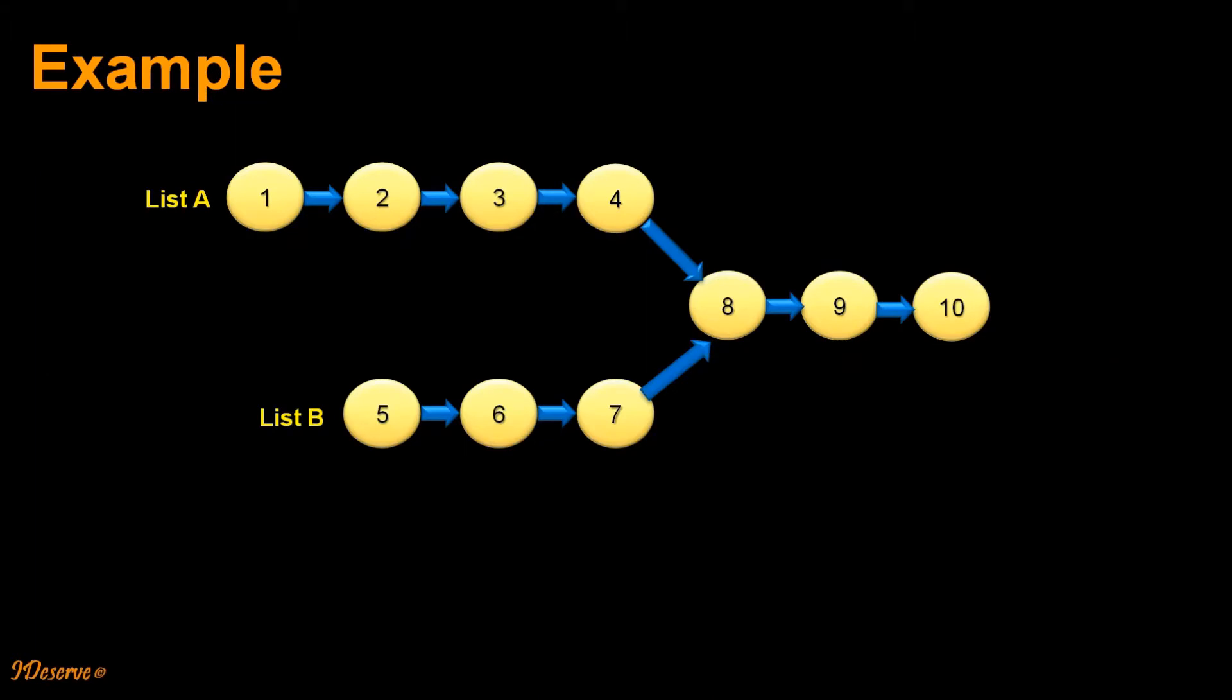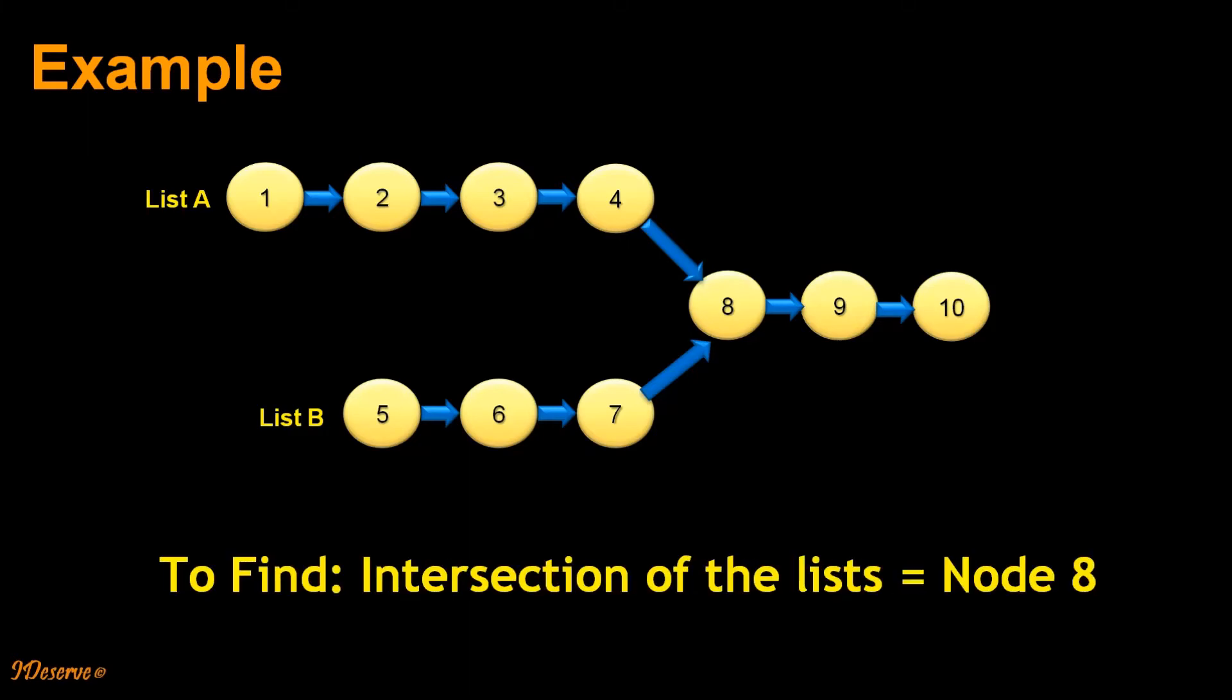Let us try to understand this through one example. We have list A containing elements 1, 2, 3, 4, 8, 9, 10 and list B containing elements 5, 6, 7, 8, 9, 10. So the solution here would be node 8.